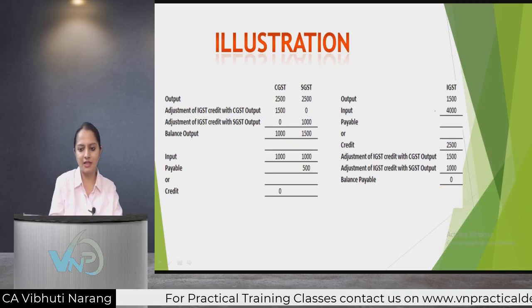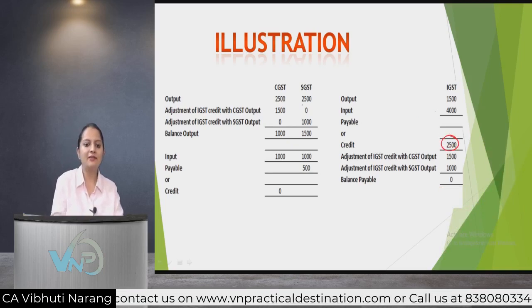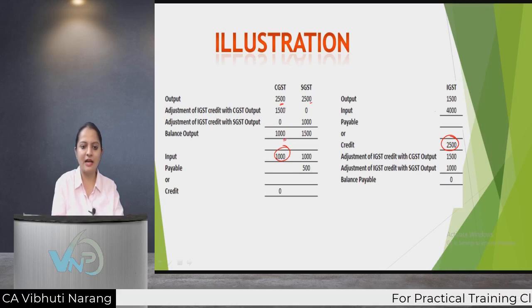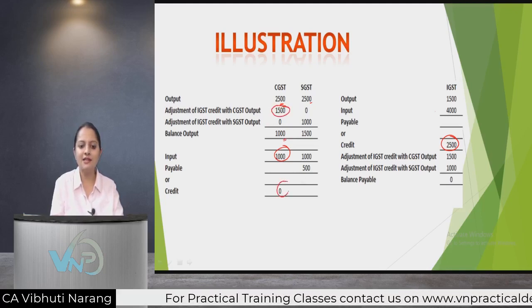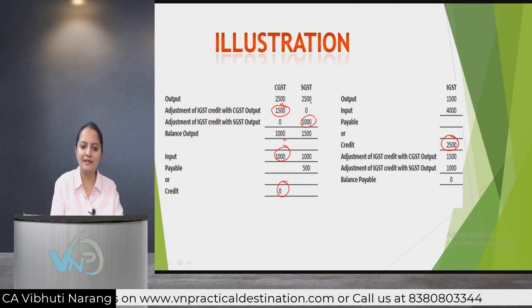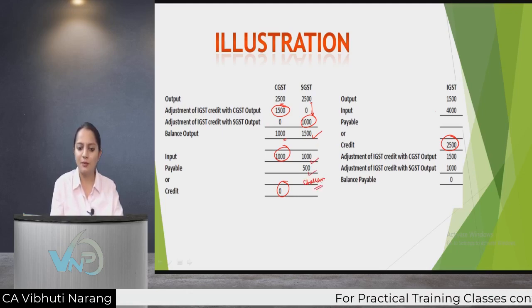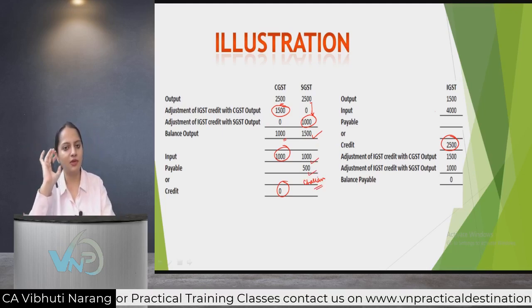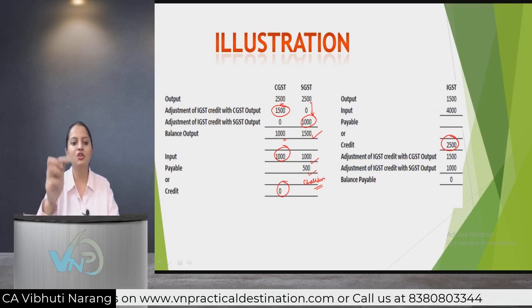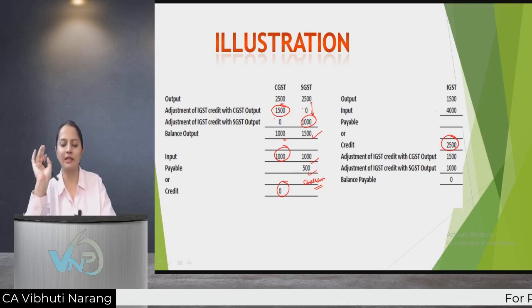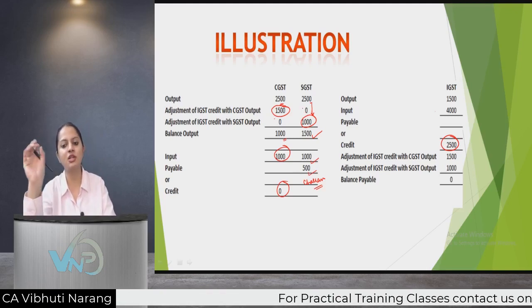For example, with IGST credit of 2500 and CGST input of 1000: I adjusted 1500 of IGST credit against CGST output to bring the CGST net to zero, then adjusted the remaining 1000 against SGST output of 1500, leaving 500 SGST payable via challan. Alternatively, you could split the 2500 as 1250 each against CGST and SGST output, or 1000 against CGST and 1500 against SGST — any combination is valid.